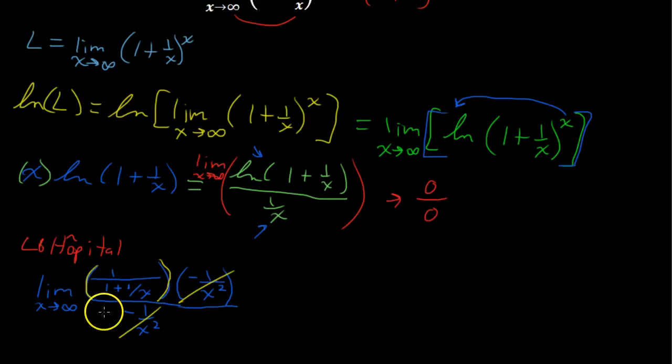Well, that is not an indeterminate form. And in fact, the limit of this, of 1 over 1 plus 1 over x, as x approaches infinity, equals 1. But wait a minute. That is not the answer to our original question. What we found is the natural log of the limit. So we say that the natural log of the limit L equals 1.